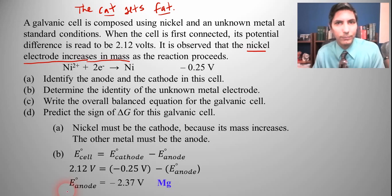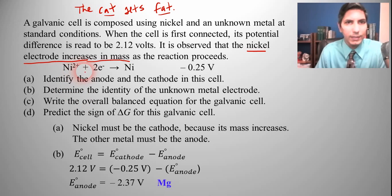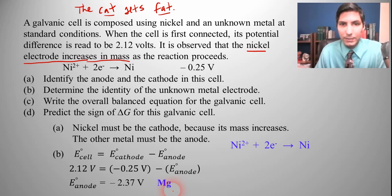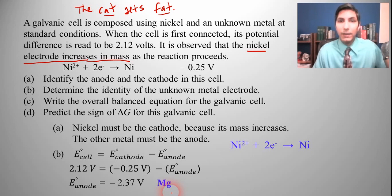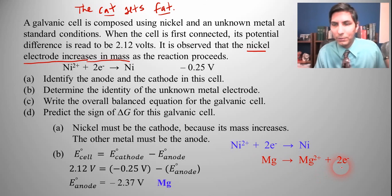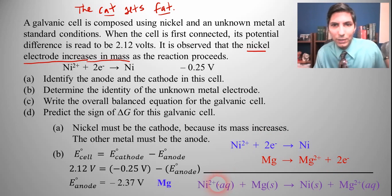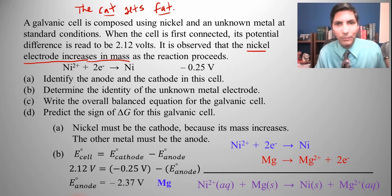Now let's write the overall balanced equation. Nickel is the cathode, so that's the reduction and stays as written. Magnesium is the anode, so it's oxidized: magnesium yields magnesium 2+ ions and two electrons. The two electrons cancel out nicely when we add the half-reactions together, giving us the overall balanced equation with states.